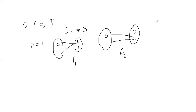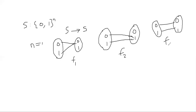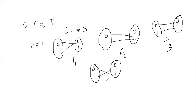The third function maps 0 and 1 to 0 and 1 respectively — an identity function. This is f3. And we are left with one more function: 0 and 1 map to 1 and 0 — a crossover. So we've defined four functions. If n is one, there are four possible functions you can define from set S to itself.